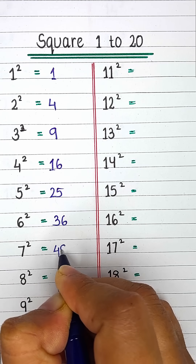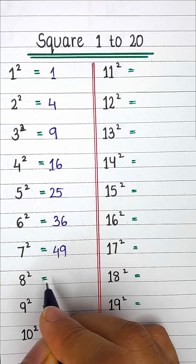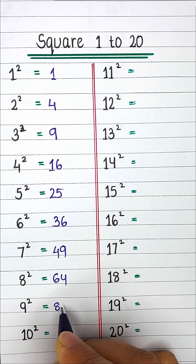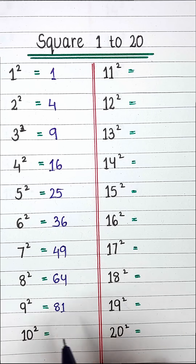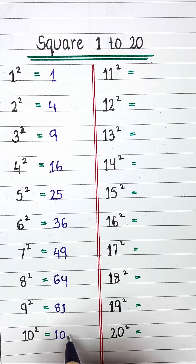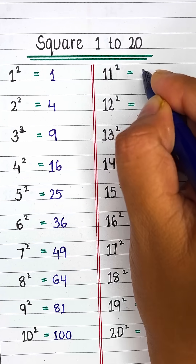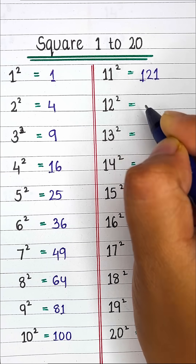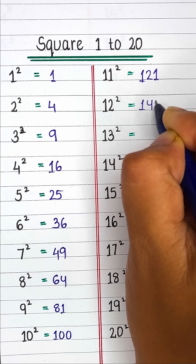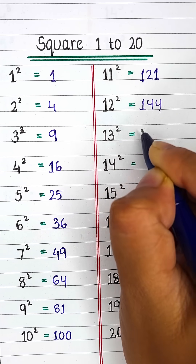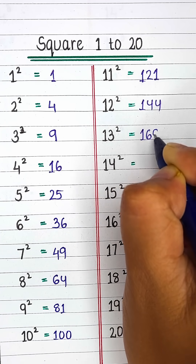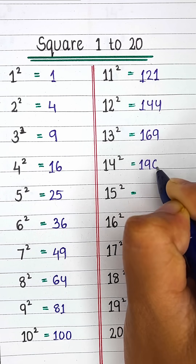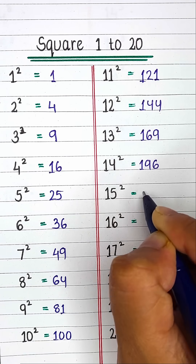Square of 8 is 64. Square of 9 is 81. Square of 10 is 100. Square of 11 is 121. Square of 12 is 144. Square of 13 is 169. Square of 14 is 196. Square of 15 is 225.